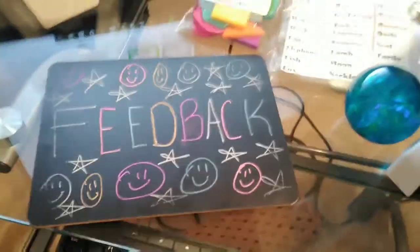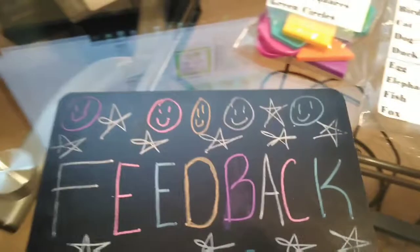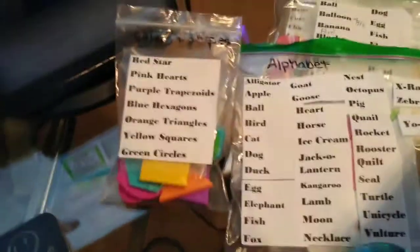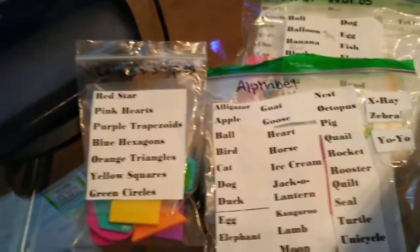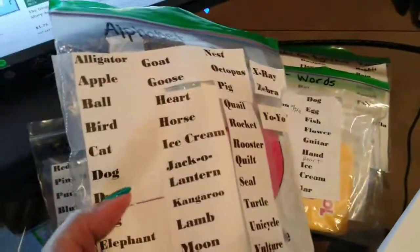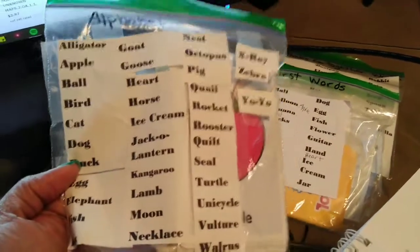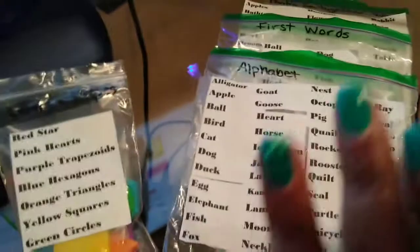I always have my feedback sign with me so that I can flash it at the end of class. And I have flashcards — I have shapes. As you can see, I've put them into plastic bags, and I've labeled every flashcard in alphabetical order. I have more, but these are just the ones I'm going to be using tomorrow.